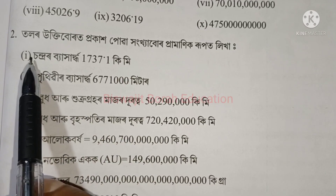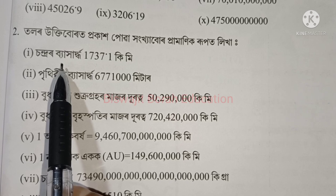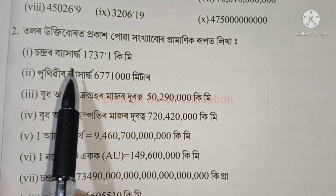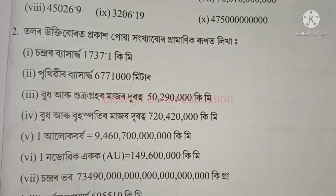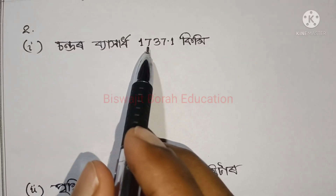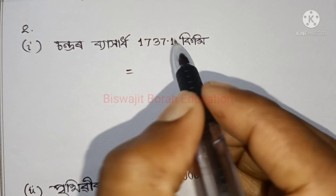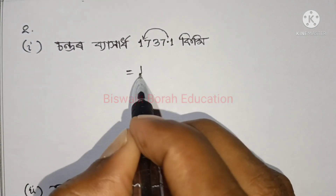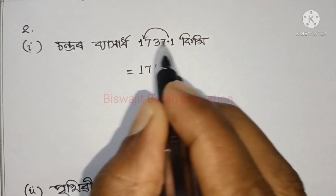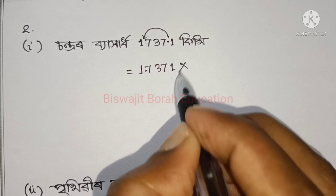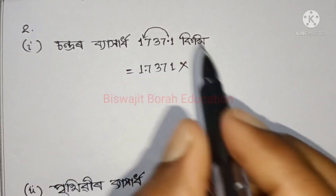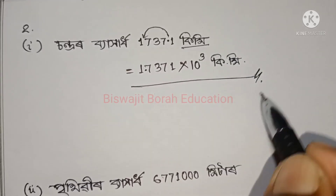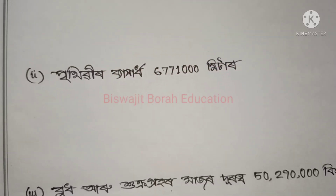Now we look at the numbers. The explanation is given here: 1737.1 km. We need to write this in standard/scientific form. Our answer will come from writing 20 figures. Let us write 17371 and proceed to find the scientific notation.